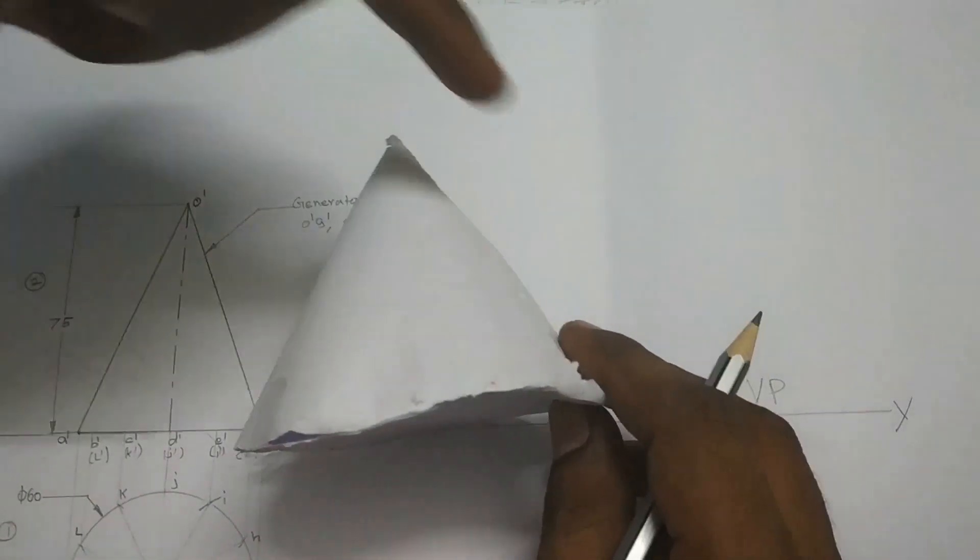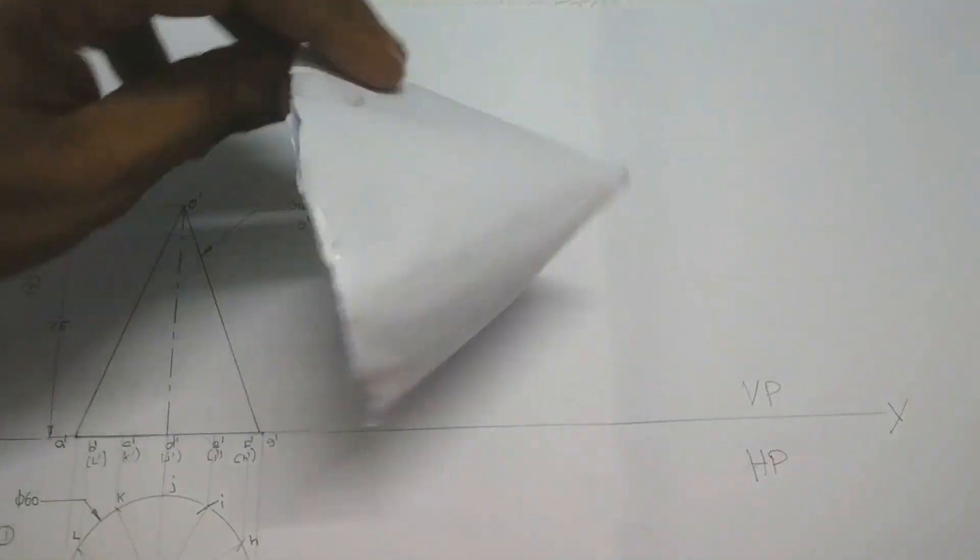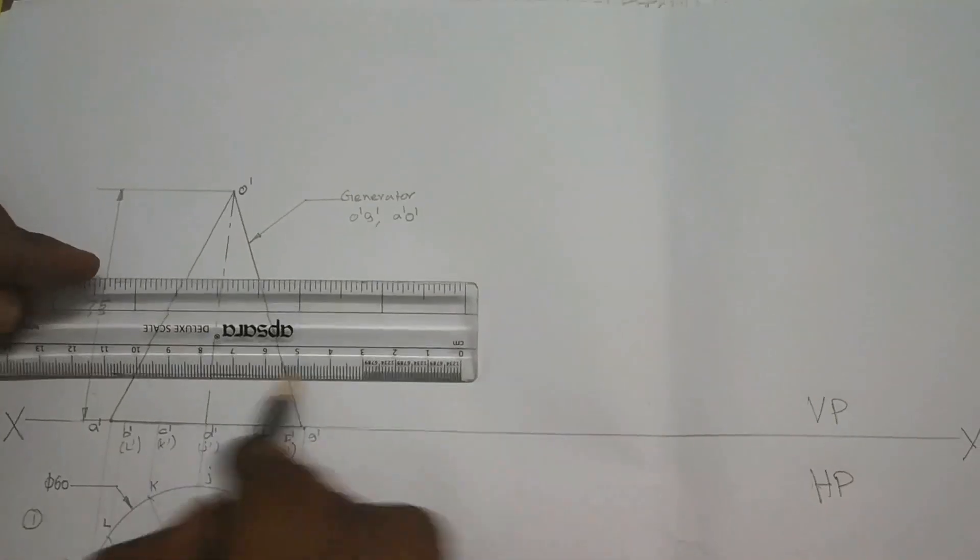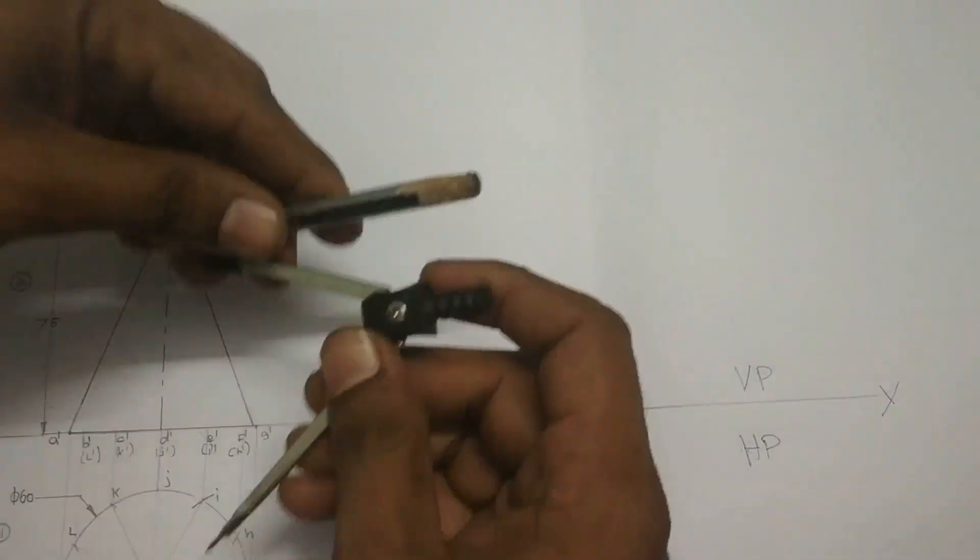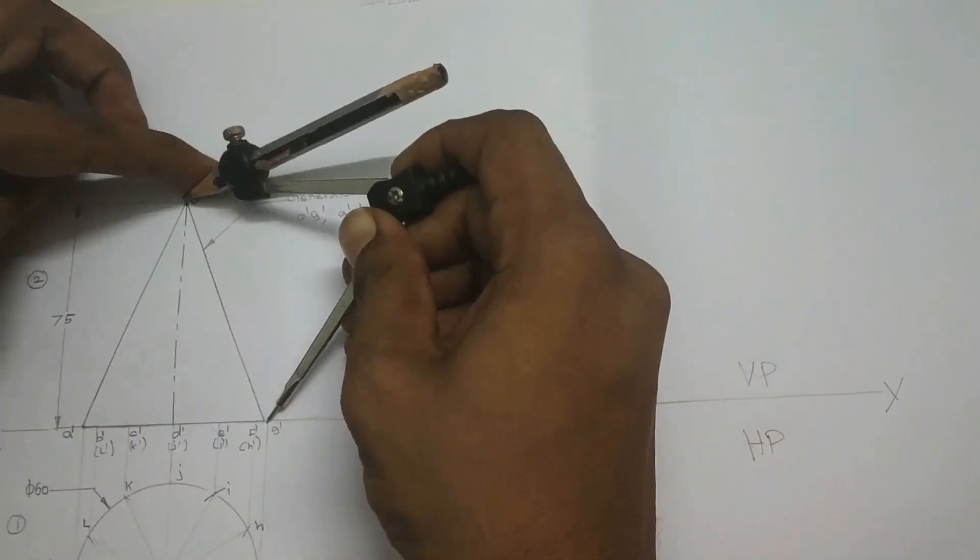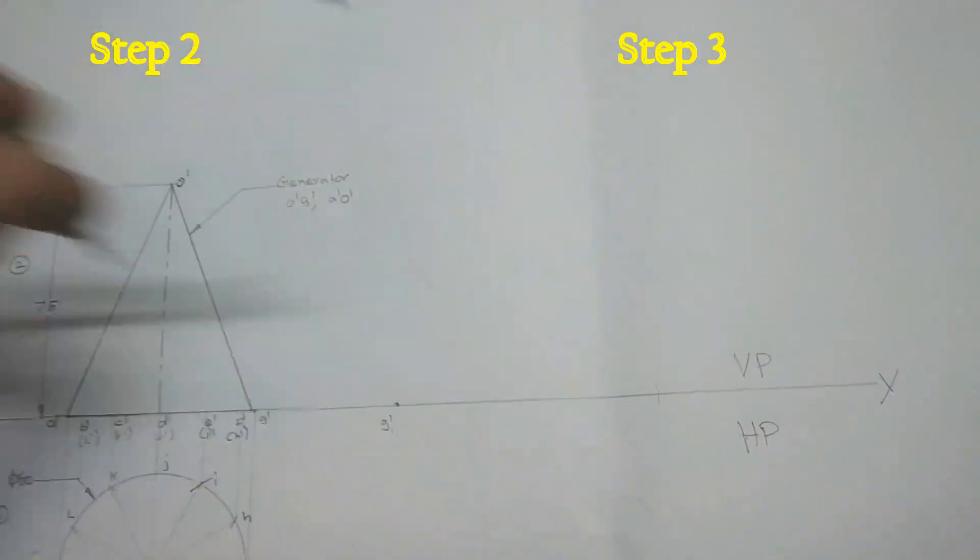We have to maintain a little bit gap between step 2 to step 3. So here I am giving 5 centimeter gap. So mark the G1 dash first. Measure the distance G dash to O dash.